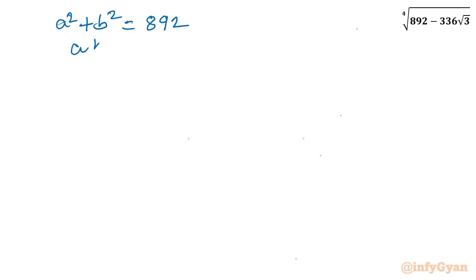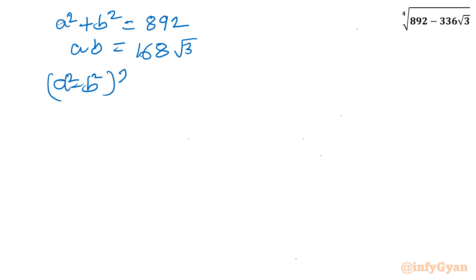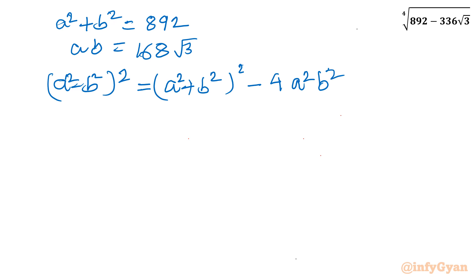Now I will use one identity. It is a squared minus b squared whole square, which is equal to a squared plus b squared whole square minus 4 times a squared b squared. Simply put the value of a squared plus b squared, so I will write 892 whole square.